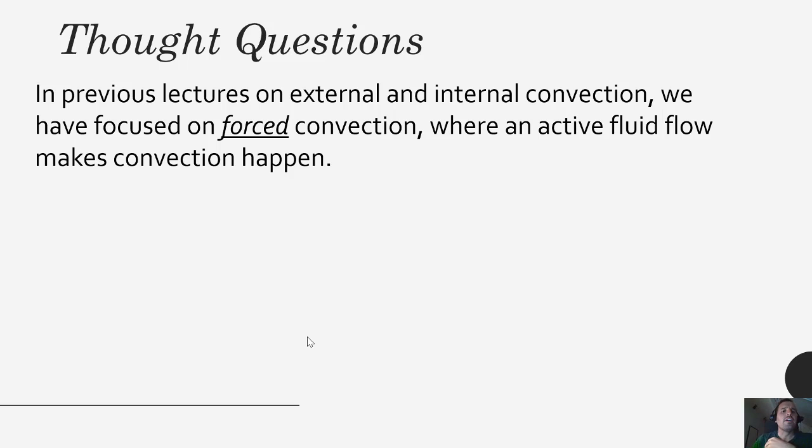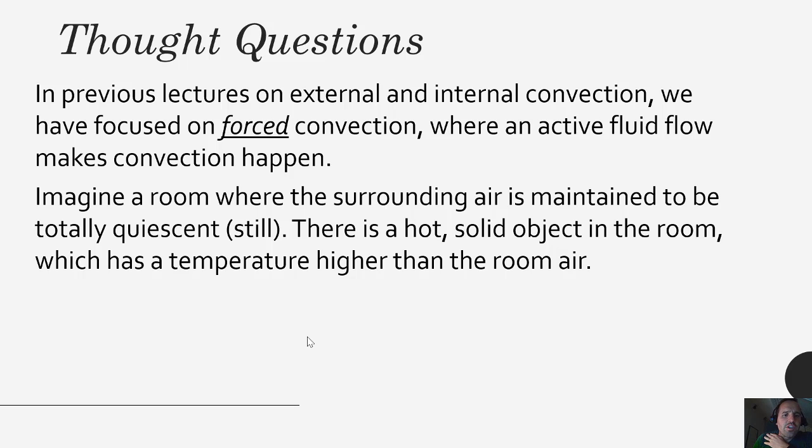I want to start out by providing you with some thought questions. In previous lectures when we've talked about internal and external convection, we have focused on what's called forced convection, where you have an active fluid flow that makes convection happen. Imagine if you don't have that forced convection. Imagine a room where the surrounding air is maintained to be totally quiescent, which means just still. It's not moving or circulating.